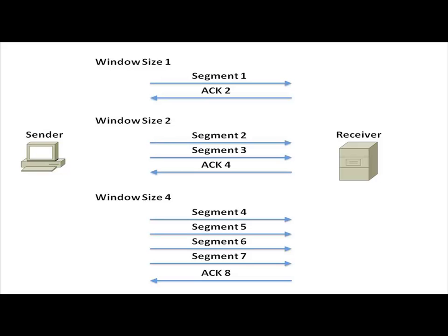Notice on screen, we're starting out with a window size of one, meaning I'm going to send one segment and I get an acknowledgement. I sent segment one, the receiver acknowledges and says, okay, send segment two. Because segment one got there successfully, I'm now going to send segment two and I'm going to send segment three. You see, I doubled my window size. The receiver got them. The receiver said, send me segment four.